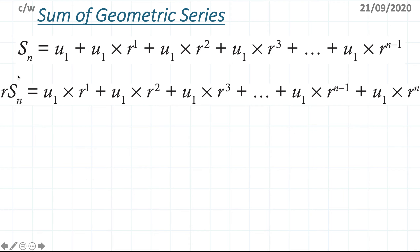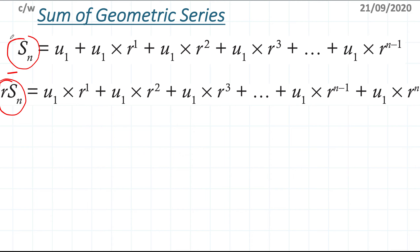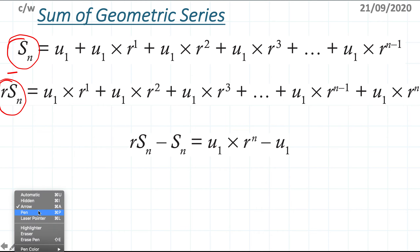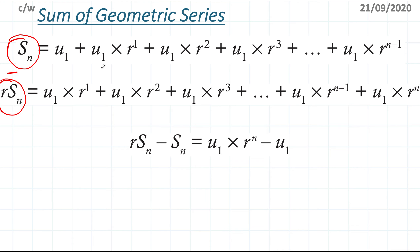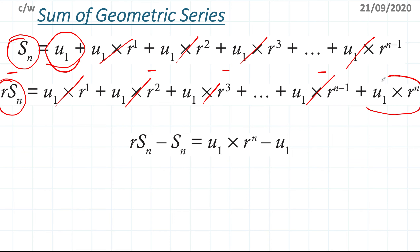Now we subtract the two expressions from each other. Most terms cancel out: u1·r cancels, u1·r² cancels, and so on down the line. The only terms that don't cancel are u1 from Sn and u1 times r to the power of n from r·Sn. So we're left with r·Sn minus Sn equals u1·r^n minus u1.